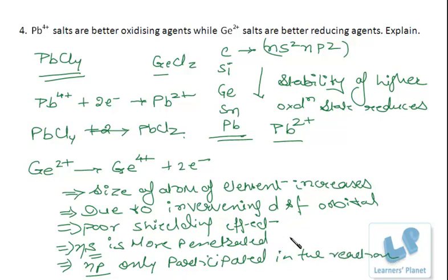Now, as the S orbital is more penetrated, we can say that more energy is required to take out these two electrons. And the ion formed would be then Pb4+. The charge is very high. And so, what happens? The size decreases.